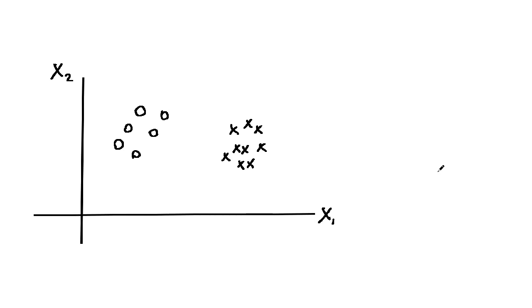The circles indicate class 1, and the x's indicate class negative 1. In this example, the points appear to be separable by a line.